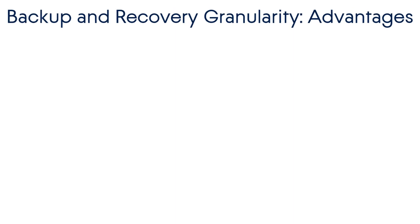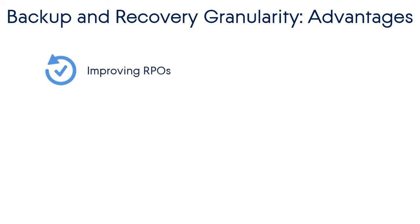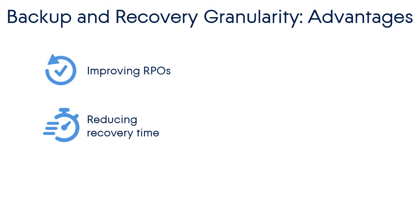The fact that Acronis Data Cloud supports numerous backup and recovery options for various platforms has several advantages. Firstly, it can significantly improve the recovery point objective. As you remember from previous modules, the RPO answers the question: how far back in time do you need to go? It helps define the backup frequency. For example, a company with a shared folder updated frequently can create a backup plan for that specific folder and back it up as frequently as needed to mitigate the risk of data loss.